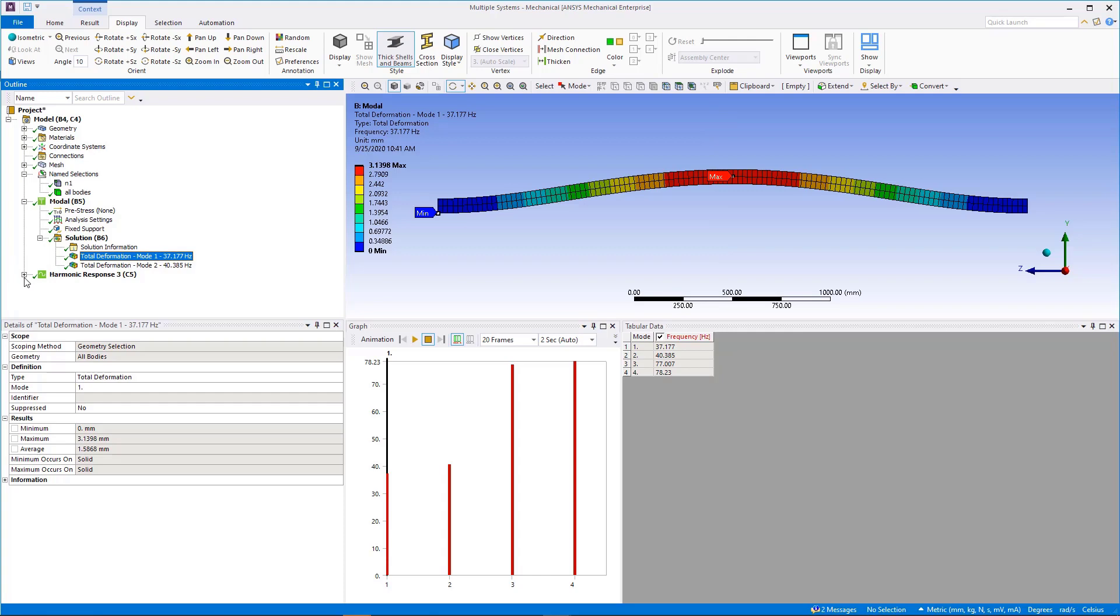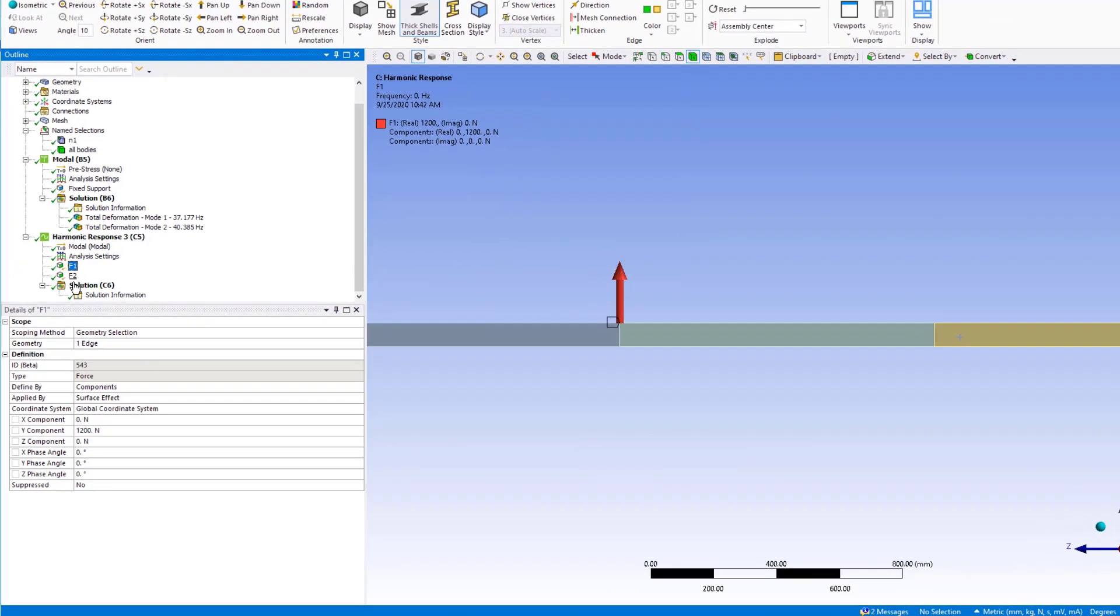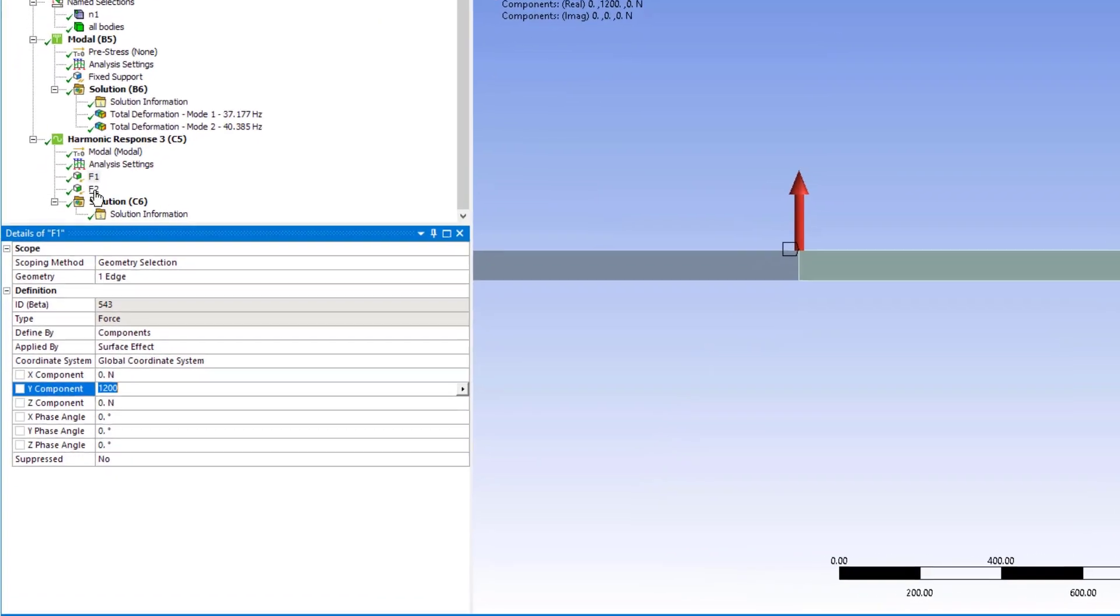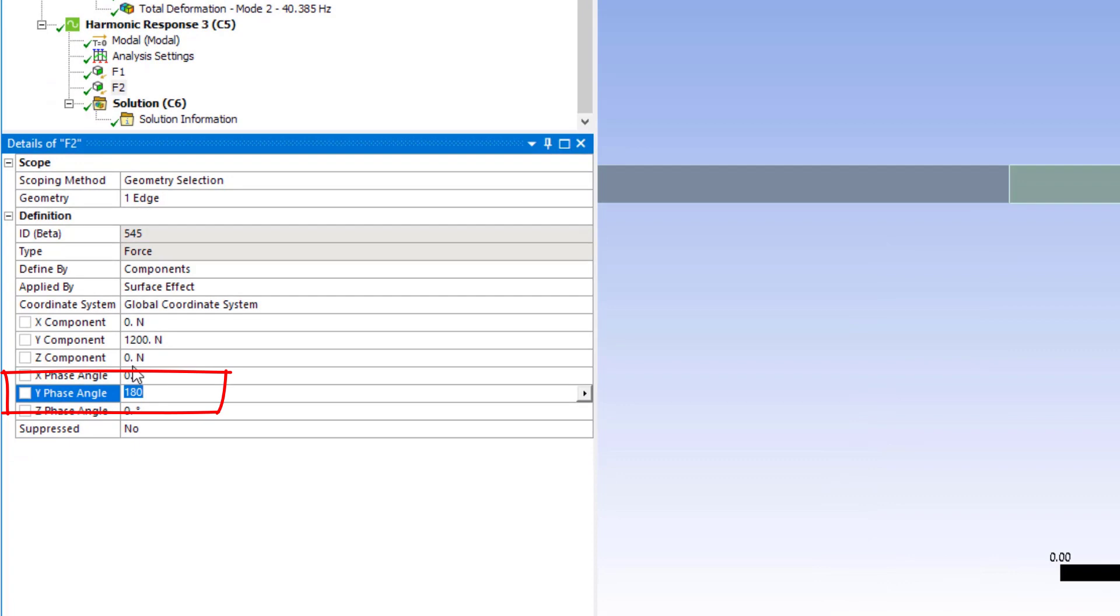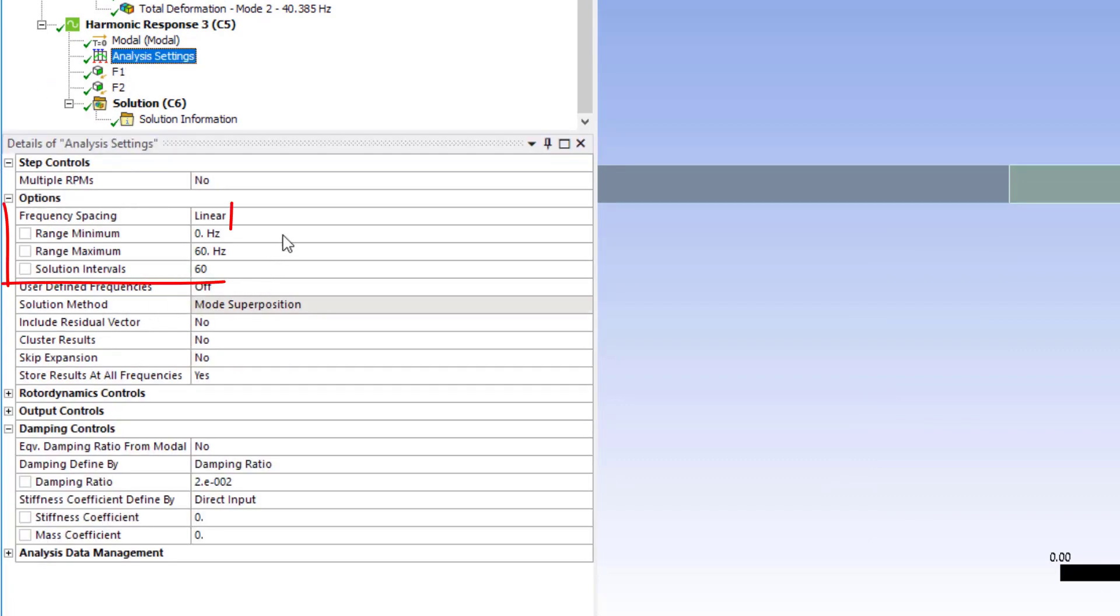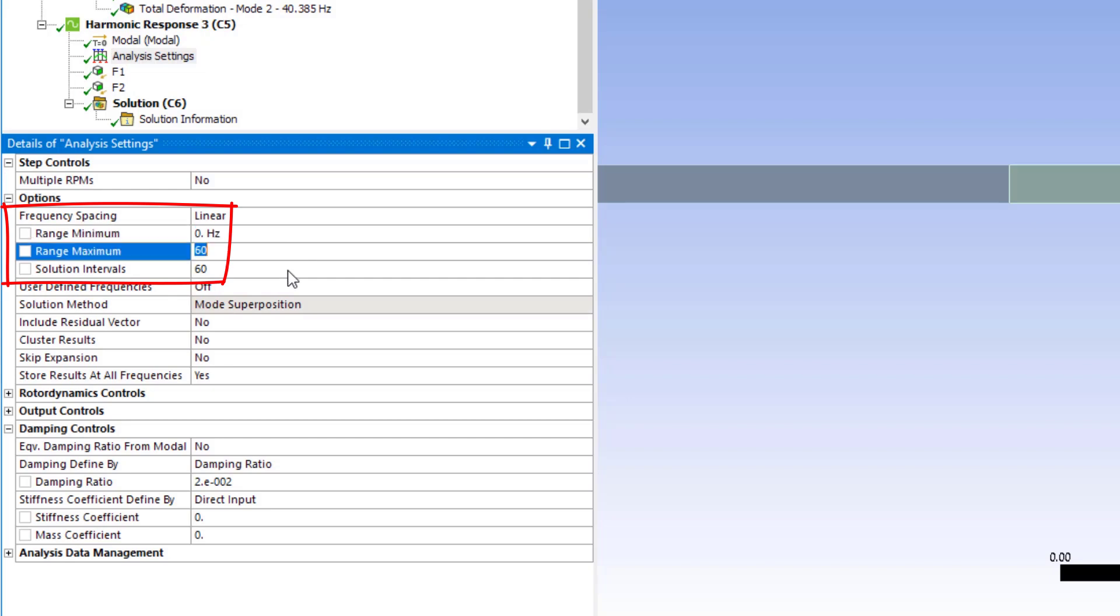Under the harmonic system, the two forces were strategically applied in y direction and out of phase with each other by 180 degrees. Under analysis settings, we have defined the frequency sweep from 0 to 60 Hz. Solution intervals is set to 60 which means a result set will be calculated at each Hz from 0 to 60.